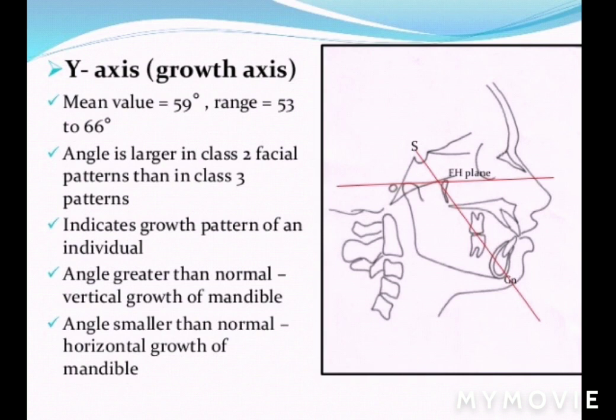Next is the Y-axis, also known as the growth axis, because it indicates the direction of growth. If the angle is greater than normal, there is vertical growth of the mandible; if smaller than normal, there is horizontal growth. The mean value is 59 degrees, and it is larger in Class 2 cases than in Class 3 patterns. The Y-axis is formed by the intersection of the FH plane and the line from sella to gnathion.